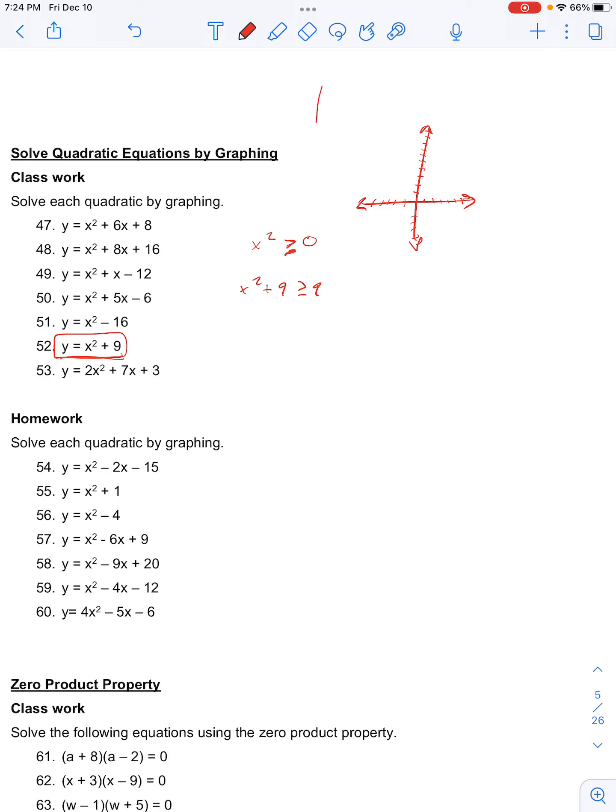If x squared looks something like this, then x squared plus 9 will just be 9 units up. So our quadratic will never be solved because we have no x-intercepts in this case.